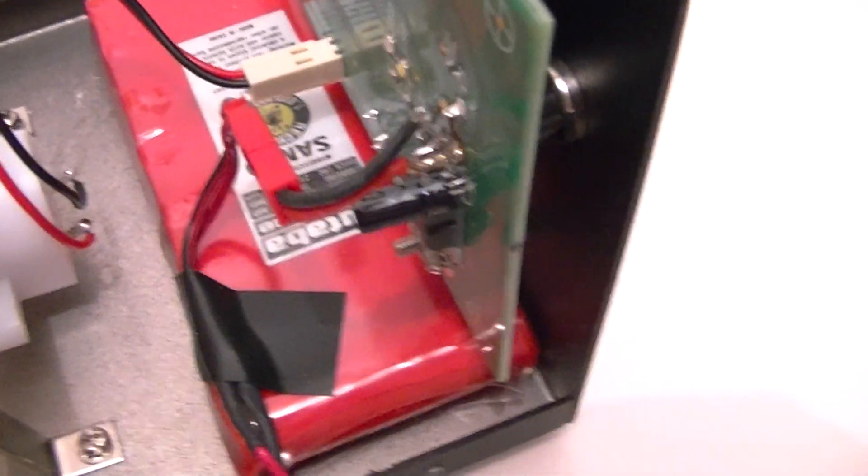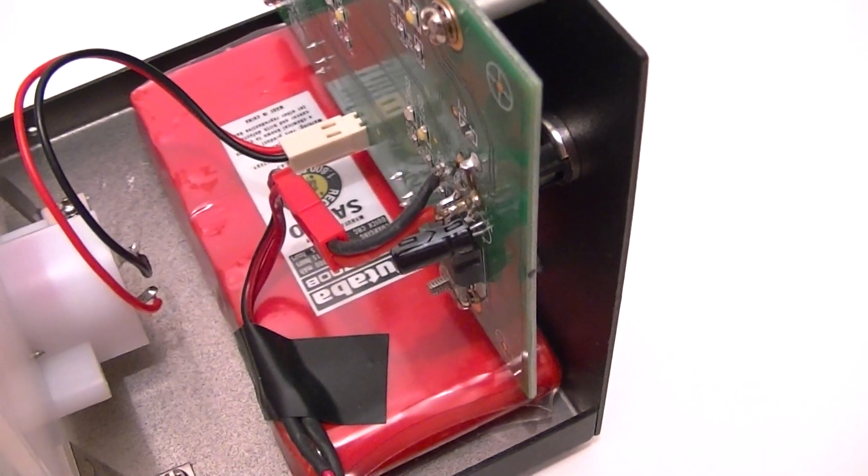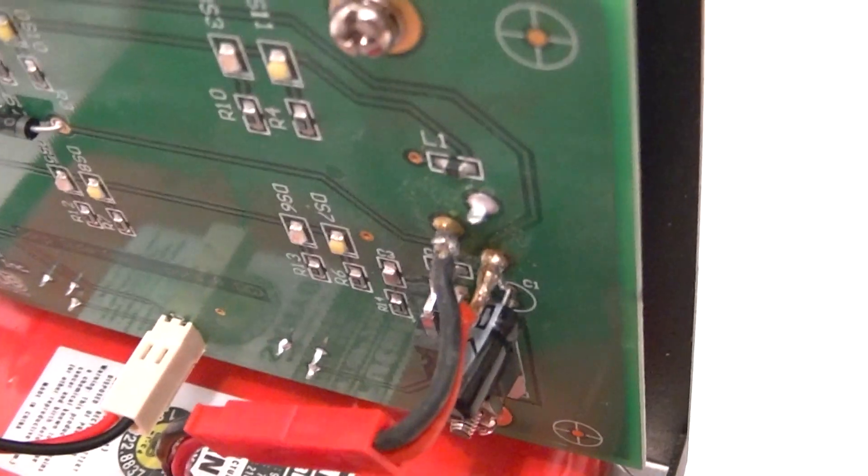Anyway, let me pull the top off and we'll set this aside and get you a closer look at what's going on. Now if you look, I've got a battery inside of here. This is a Futaba battery out of a radio control transmitter. It's 9.6 volts.